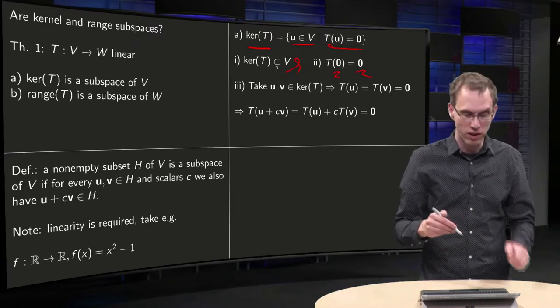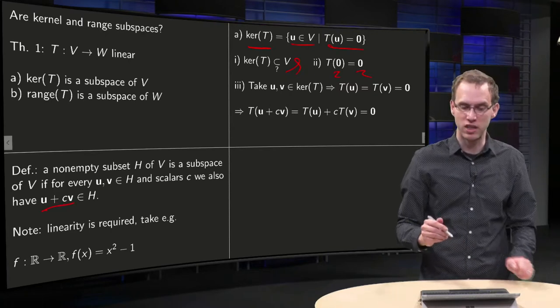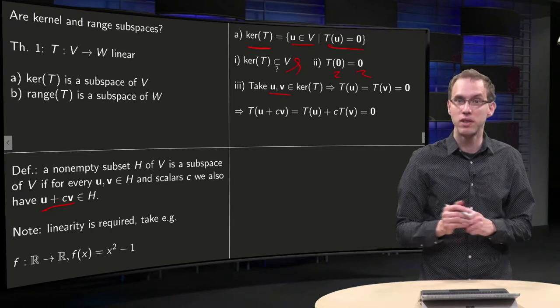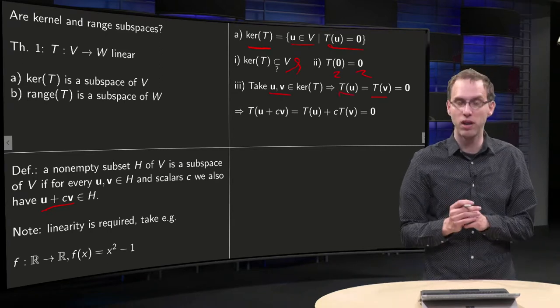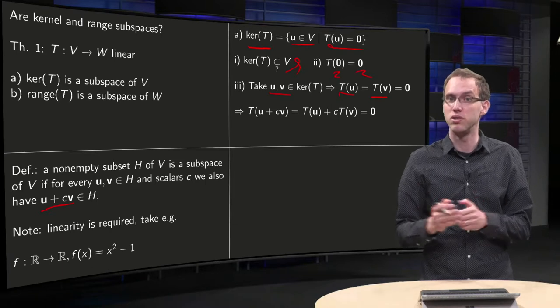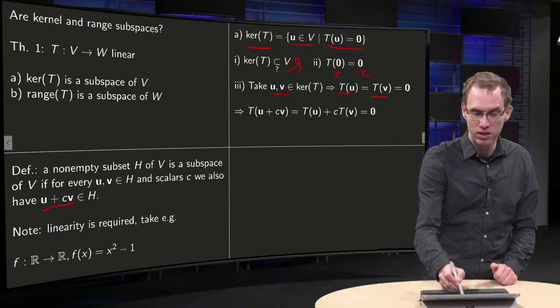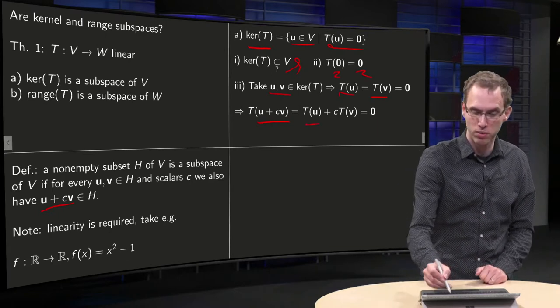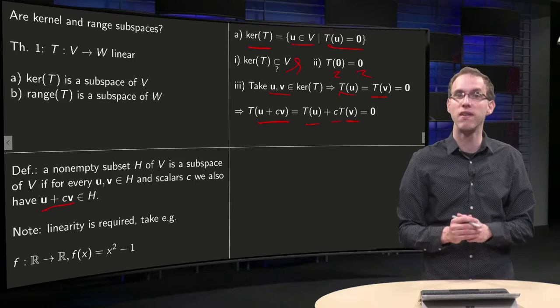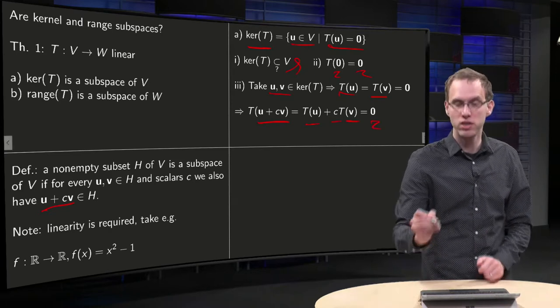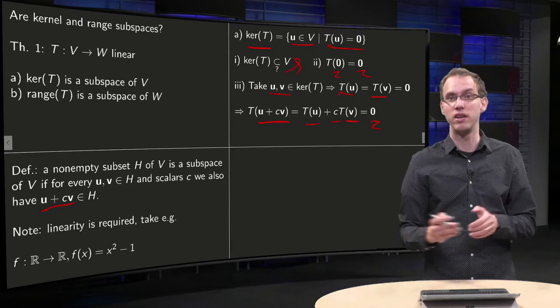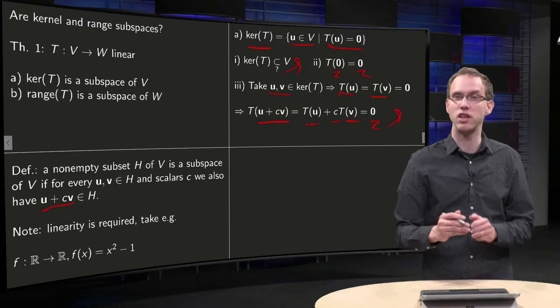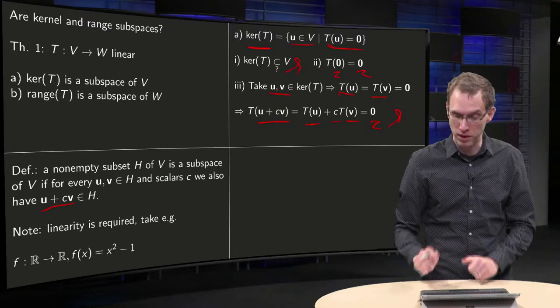So we have now a non-empty subset of V, but do we also satisfy this last condition over here? Well, let's try. Take two vectors u and v in the kernel of T, and you know that T of u and T of v are both equal to zero. Then you have to show that u plus c times v is also in the kernel. Now we can use that we have a linear transformation. T of u plus cv equals T of u plus c times T of v equals zero plus c times zero equals zero. So indeed, if u and v are in the kernel, then u plus c times v is also in the kernel. This last condition is also satisfied, which means that our kernel is a subspace of V.